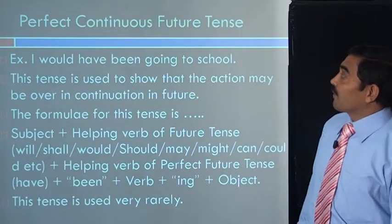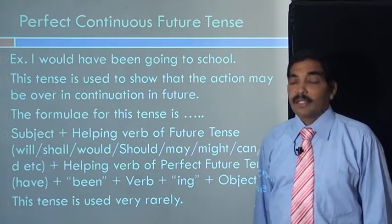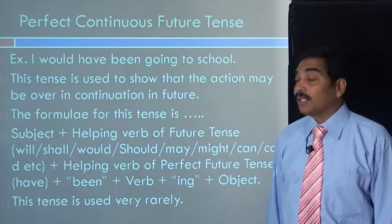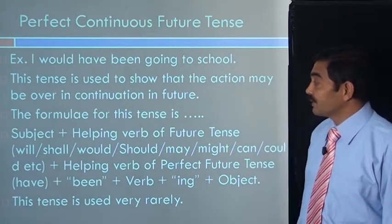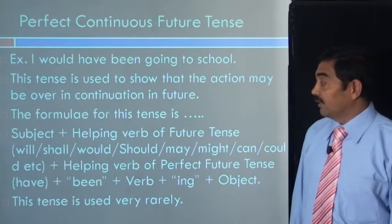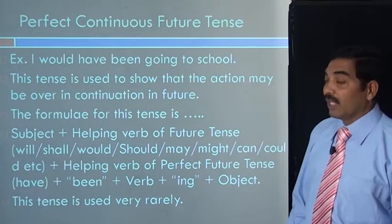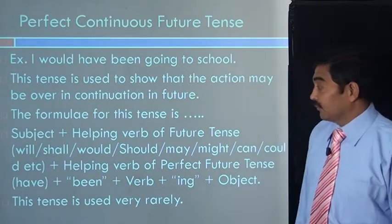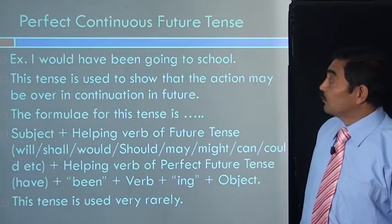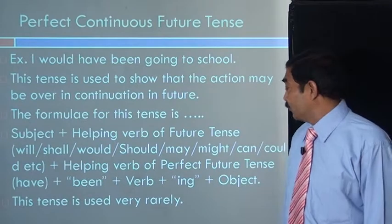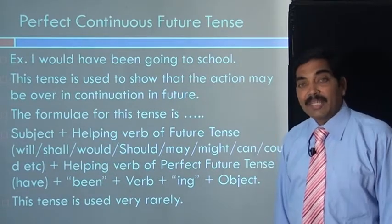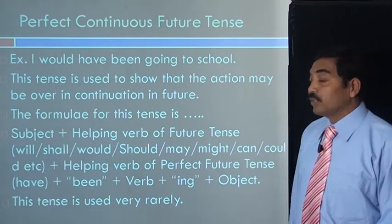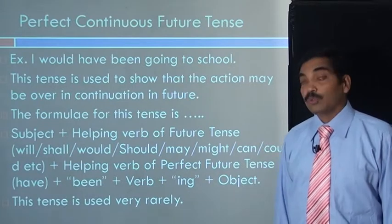Let us go to the next one: perfect continuous future tense. Example: I would have been going to school. This tense is used to show that the action may be over in continuation in future. The formula is subject plus helping verb of future tense — that is will, or shall, or would, or should, or can, or could, or may, or might, etc.; in this case we have used would — plus have, plus been, plus verb go, plus ing, plus object to school. Remember, this tense is also used very rarely.